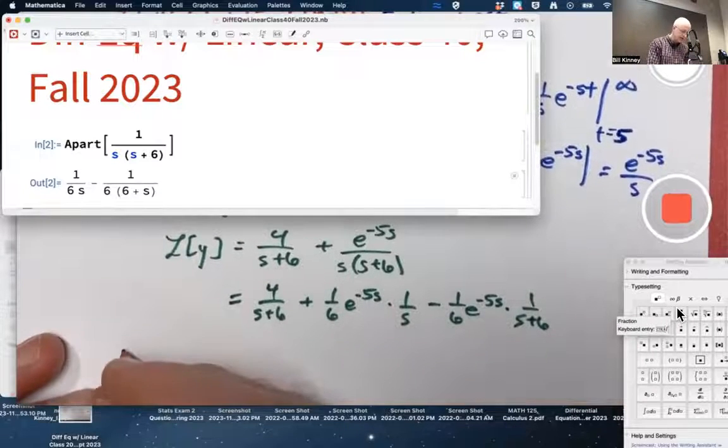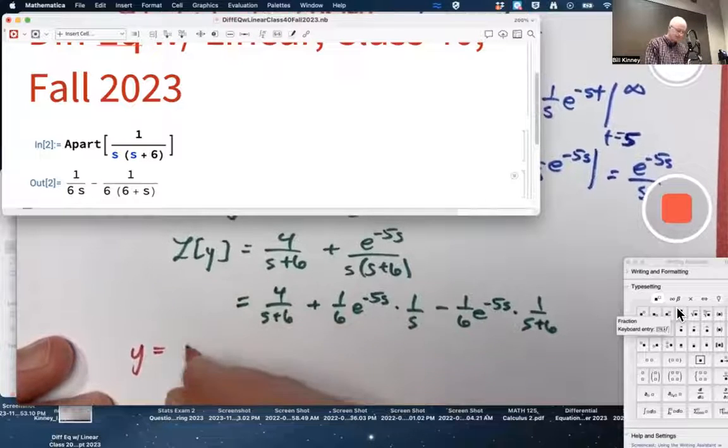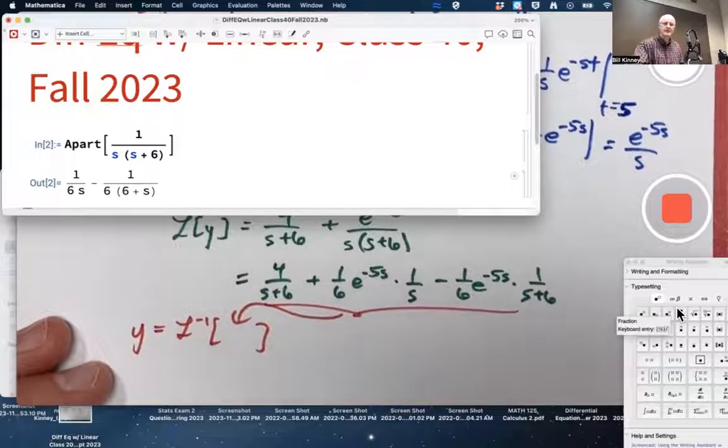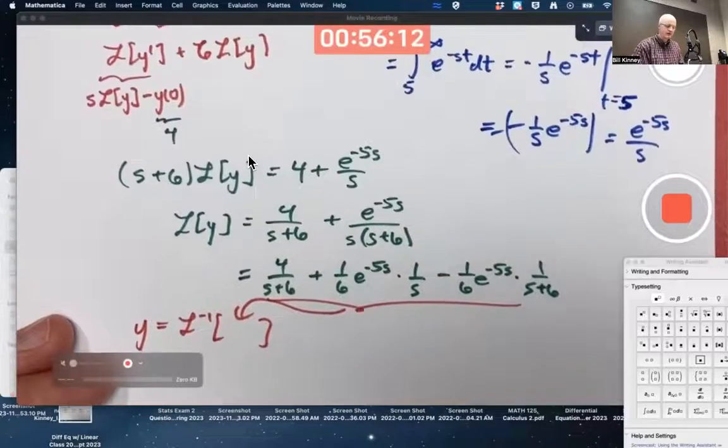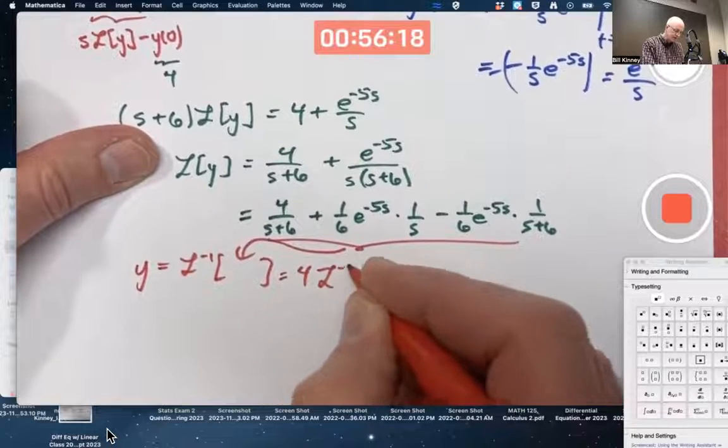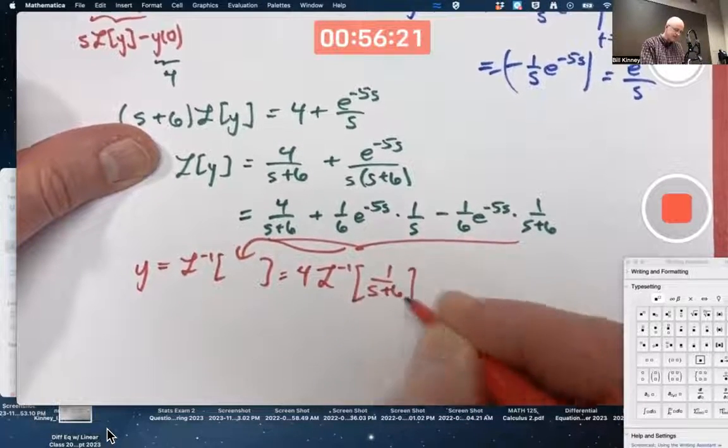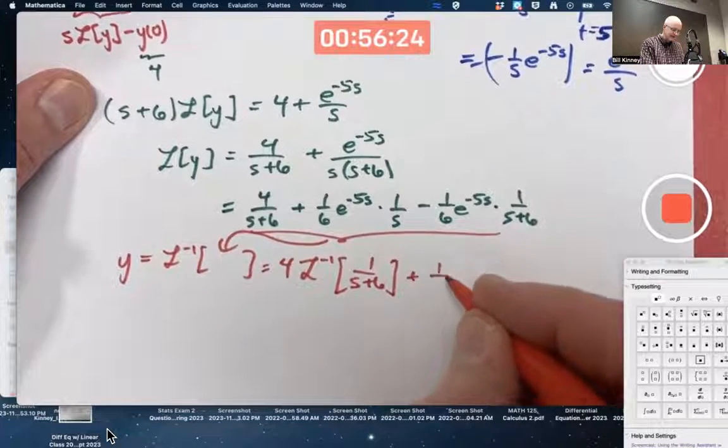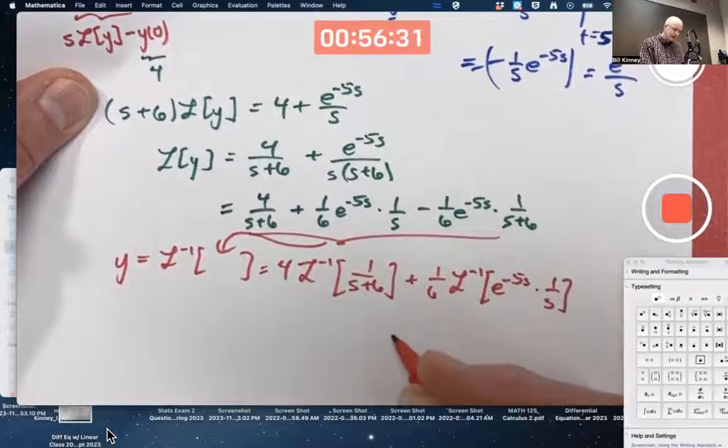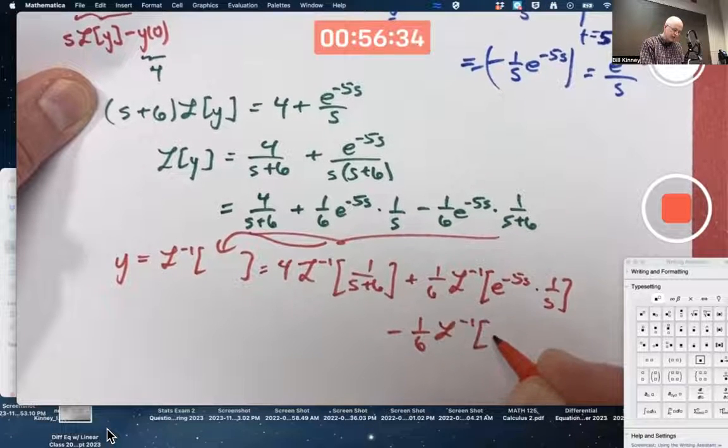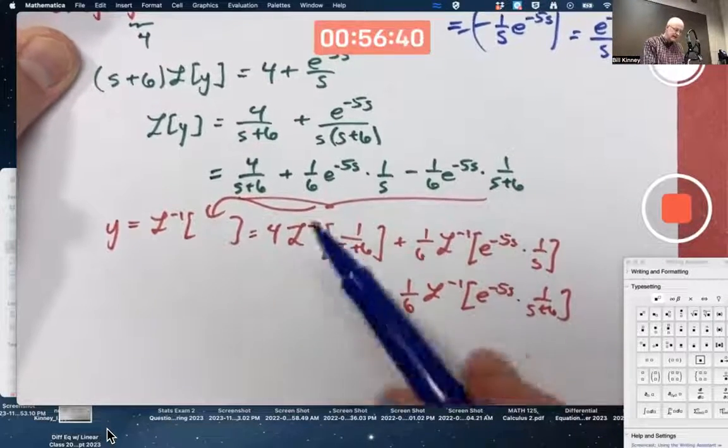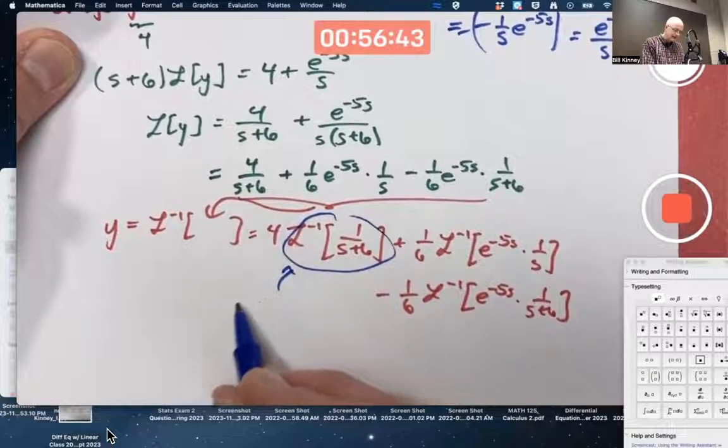Now, y, the solution, is going to be the inverse Laplace transform of that. It's a linear operator, too. It's a linear transformation. What am I going to get? I'm going to get 4 times the inverse Laplace transform of 1 over s plus 6. Plus one-sixth times the inverse Laplace transform. This doesn't look easy. You have e to the negative 5s times 1 over s. Minus one-sixth inverse Laplace transform of e to the negative 5s times 1 over s plus 6. This one's easy.